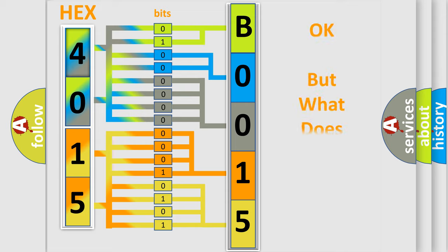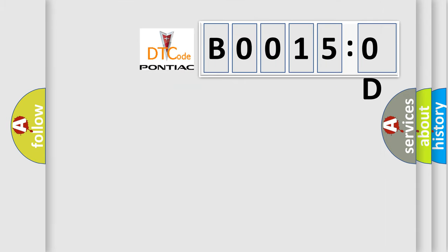The number itself does not make sense to us if we cannot assign information about what it actually expresses. So, what does the diagnostic trouble code B00150D interpret specifically for Pontiac car manufacturers?